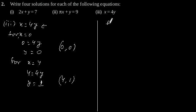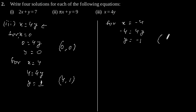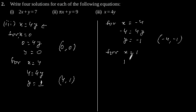Now let's solve for x is equal to minus 4. By putting the value of x is equal to minus 4, we will get y is equal to minus 1, which is our third solution: (minus 4, minus 1). Now let's put x is equal to minus 1, which gives y is equal to minus 1 by 4, our fourth solution.